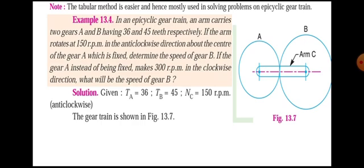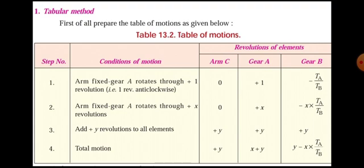Now we draw the table for the tabular method. The table has columns for the revolution of elements: the arm, gear A, and gear B. First, we fix the arm — arm is fixed, so its speed is zero. Gear A is given plus one revolution, that is one revolution in the anti-clockwise direction, so plus one.